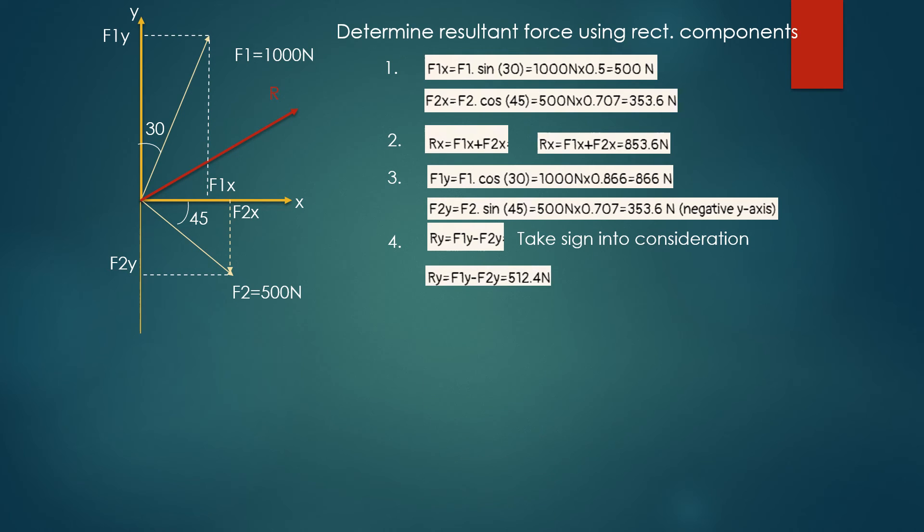As a result, the size of the resultant force equals the square root of Rx squared plus Ry squared, which gives us 995.6 newtons.